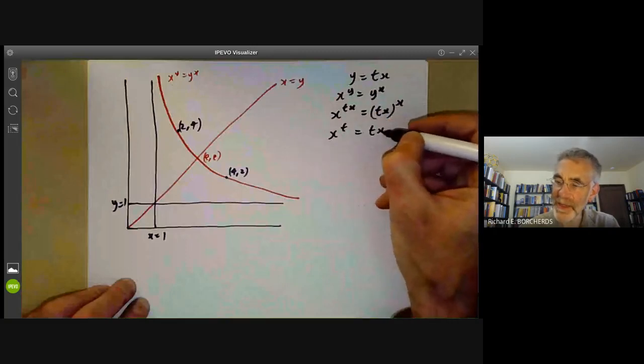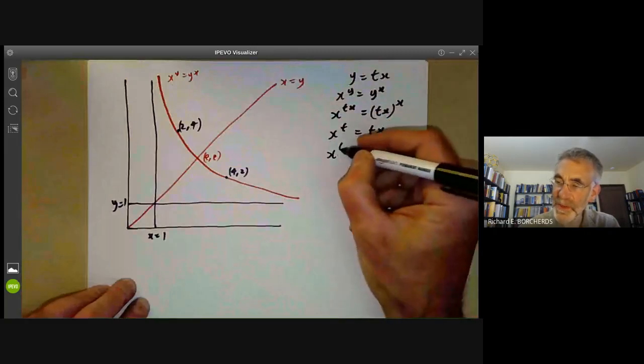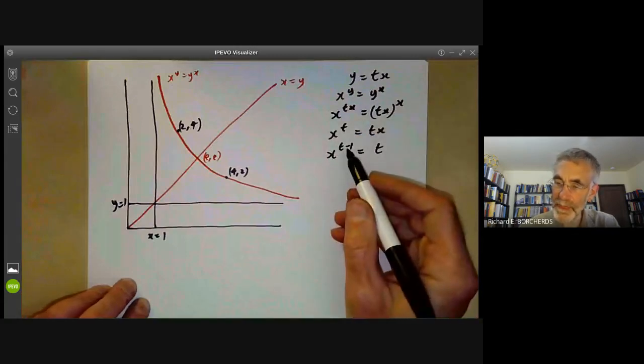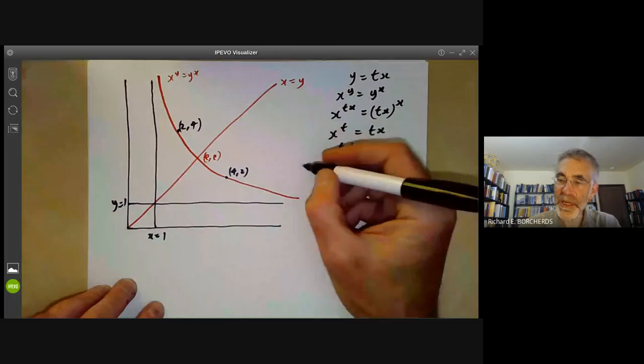Now we can take the x root of both sides and we find x to the t equals t x. Now we divide by x, x to the t minus 1 is equal to t. And now if t equals 1, we just get the solution x equals y.